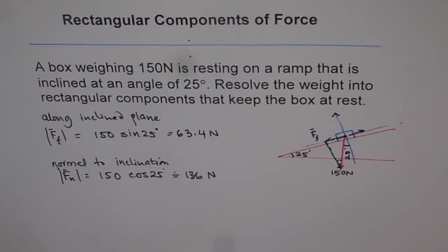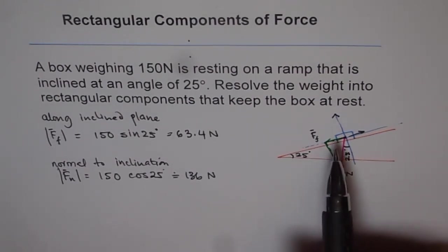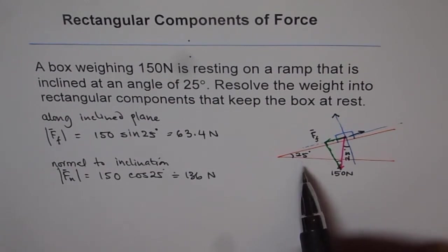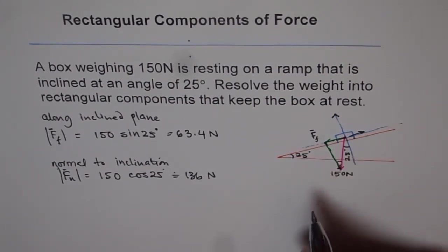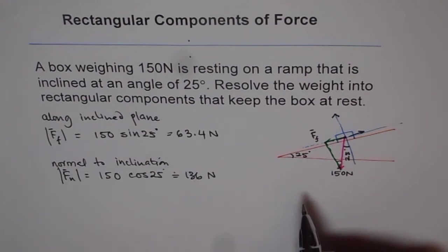Rectangular components of forces may not always be along the horizontal and vertical x and y axis — they could be along any surface. The important thing is that the angle between the two components is always 90 degrees when we say rectangular components. In most situations, it is the force times cosine or sine of the angle that gives these components. When you make your vector diagram it will be clear which to use. Trigonometric ratios help you resolve forces — and vectors in general — into their components.